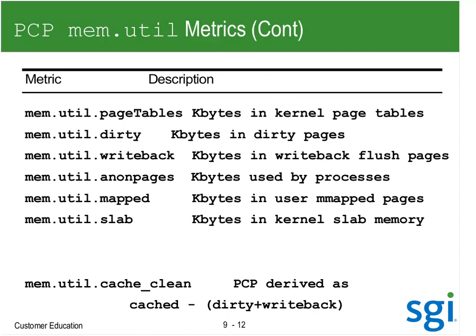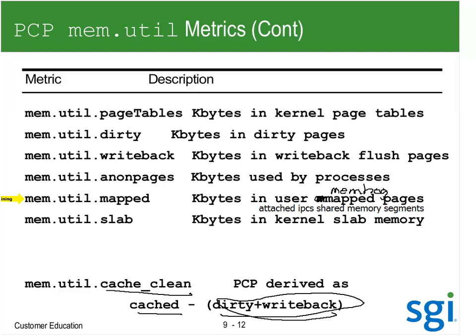Here are the key ones: dirty writeback, my process space, my shmem - attached IPCS, attached shared memory segments. Memhog does mmap things, but they show up in the anon pages, not in the mapped field. And again, cache clean - PCP derived is cache minus the dirty plus writeback, because those are not clean. But it needs to subtract NFS unstable and shmem, which were not available at the time this derived metric was put into PCP - trying to get something similar to what IRIX had.